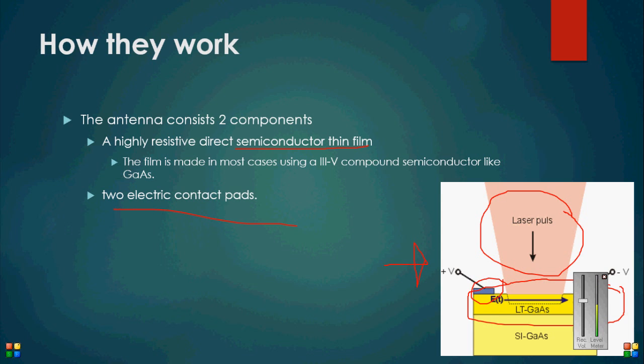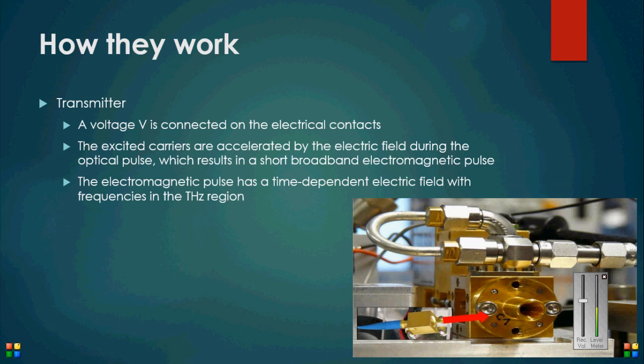The antenna functions as a transmitter when a voltage is applied to the two contacts, whereby the excited carriers from the film are transmitted via an optical pulse, resulting in an electromagnetic pulse. Here in this image we can see an example of a high-class transmitter. The signal is sent through this opening that you see here, while the remaining components are used to generate the signal.